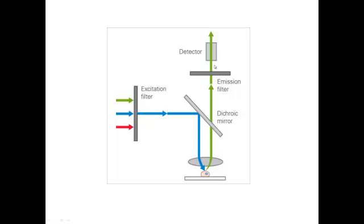The specimen is illuminated at the excitation wavelength and then viewed. Only the wavelength emitted through the sample can be detected because only this one could pass through the dichroic mirror and the emission filter. The background appears dark because of the dark condenser, and the structure stained with the fluorophore emits light indicating the presence of the structure of interest.